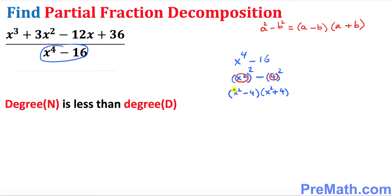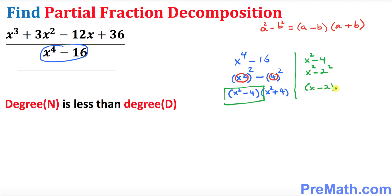Now look at this. This can be further factorized. The factor x squared minus 4 can be written as x squared minus 2 squared, which is the same as x minus 2 times x plus 2. So the full factored denominator is x minus 2 times x plus 2 times x squared plus 4.